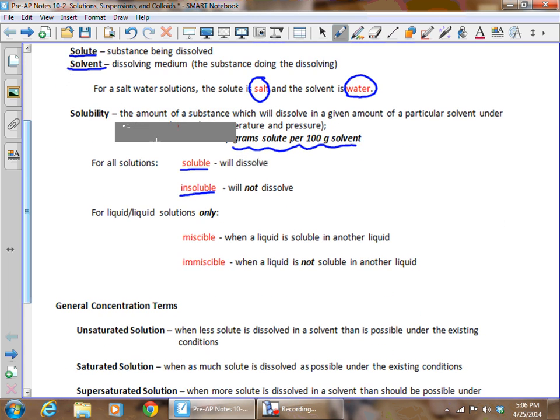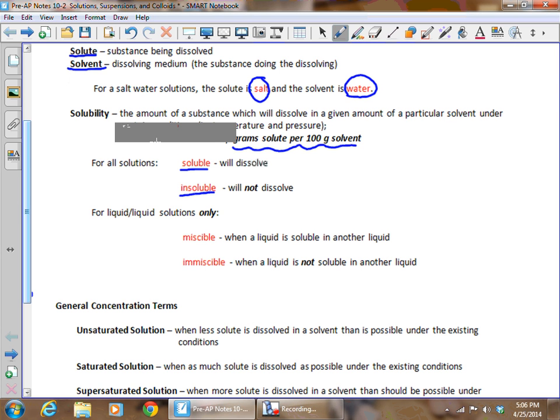If you are dealing with a liquid-liquid solution only, for instance alcohol and water, you can say that something is miscible. Miscible is a term used when a liquid is soluble in another liquid. Immiscible would be an example of oil and water, when a liquid is not soluble in another liquid.